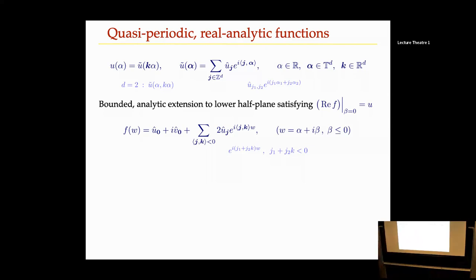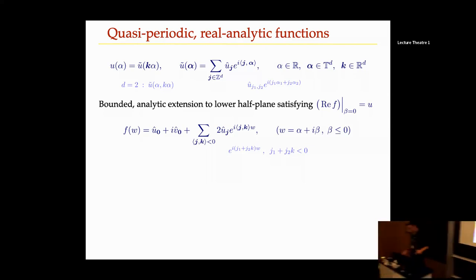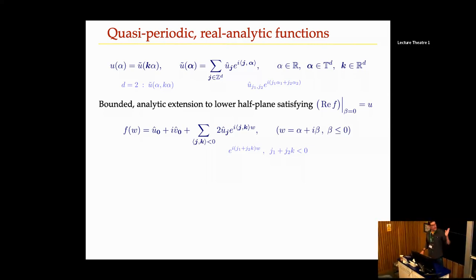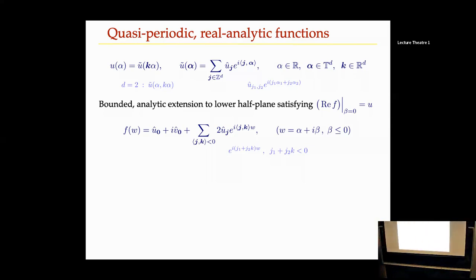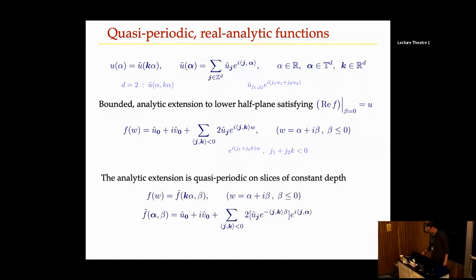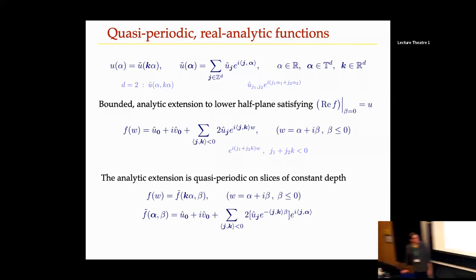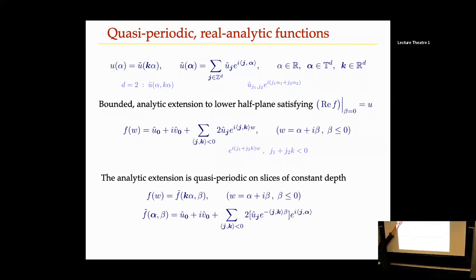K gives the two irrational directions, and J are the Fourier modes J1 and J2 in the torus expansion. The quasi-periodic analytic continuation also remains quasi-periodic on horizontal slices, so you have torus functions at every depth level. For any such slice, you get an analytic function with respect to W equals alpha plus i-beta.